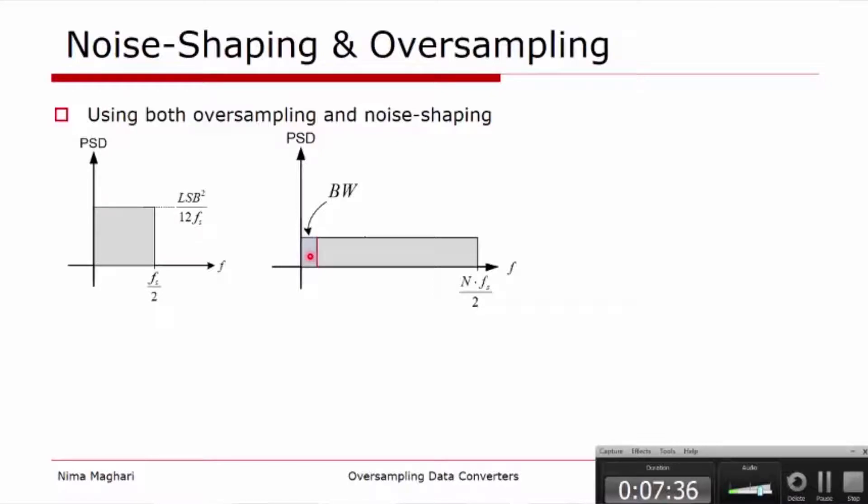Instead of going with oversampling alone, we can combine it with something called noise shaping, and the idea is to multiply this quantization noise by a high-pass filter. Once we do this, the quantization noise will be shaped and will take the form of this high-pass filter. Therefore we can see the power of the quantization noise in the bandwidth of interest would be minimized. Now this transfer function can be a high-pass transfer function for low-pass modulator or a band-pass for band-pass modulators.